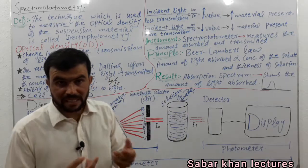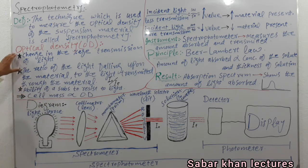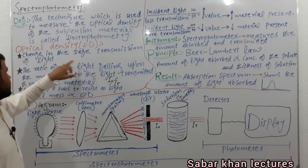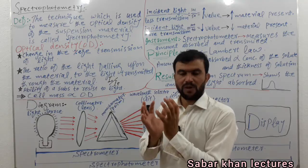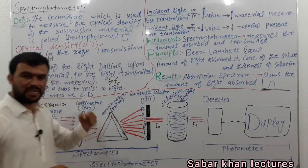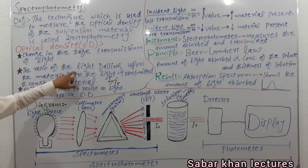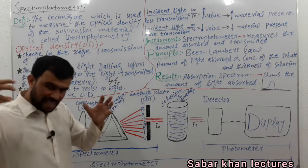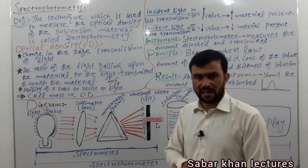Now we will come towards optical density — what is optical density, which is denoted by OD. Optical density has at least three definitions. The first definition: change in the percentage transmission of light — how much light is coming towards the suspension material and how much light is transmitted from it. The second definition: the ratio of the light falling upon the material to the light transmitted through the material. The ratio of these two light intensities is called optical density.